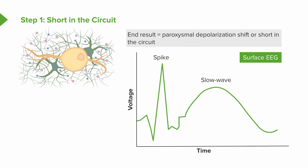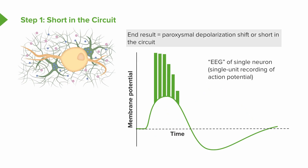The end result is something we call a paroxysmal depolarization shift — that's the short in the circuit. And that shows up on the surface EEG as a spike and a slow wave. That spike is that nidus of hyper-excitable neurons that are synchronized in their activity, and that is a sign of underlying seizure activity or where the short exists in the brain. On underlying EEG, if we were to look at EEG of a single neuron, it's that single neuron that's hyper-excitable and being excited multiple times to drive that spiking activity — a critical signature of this paroxysmal depolarization shift.